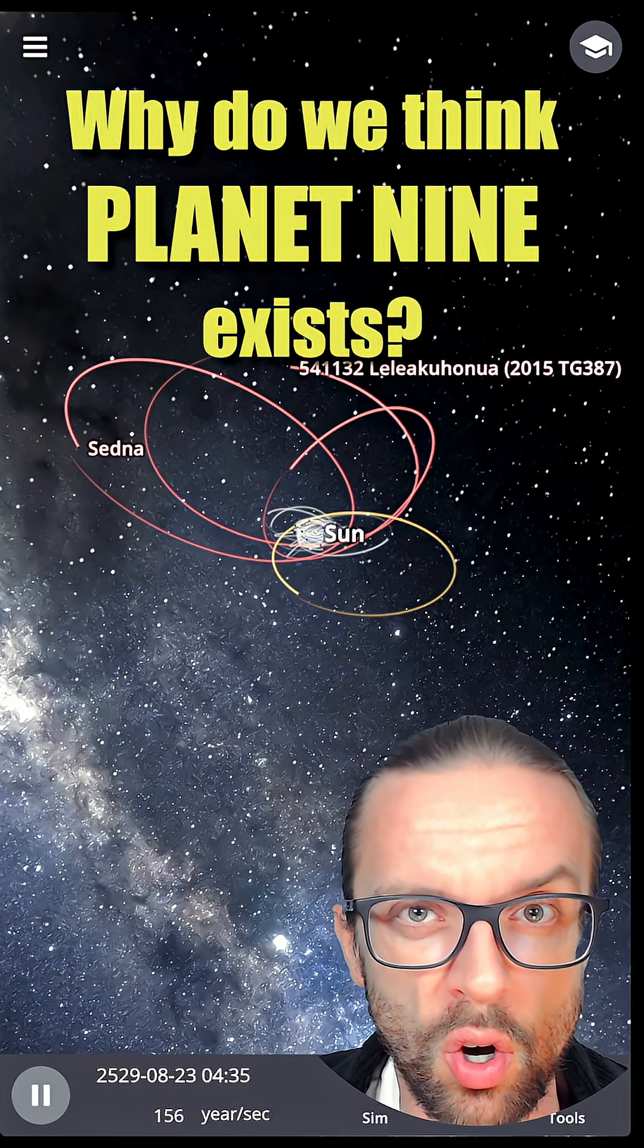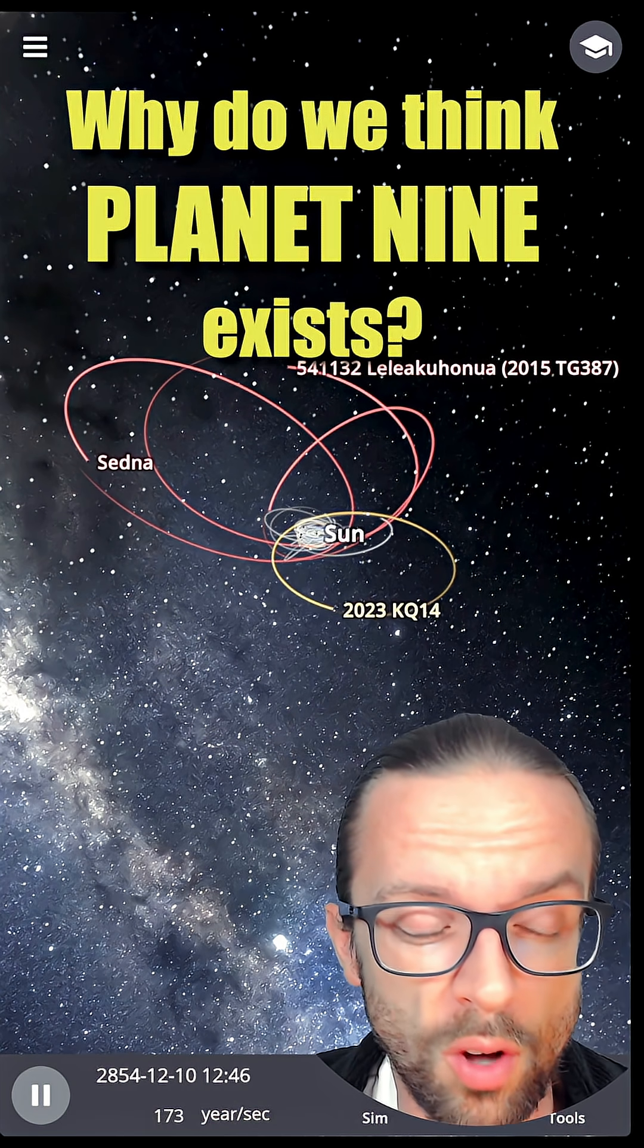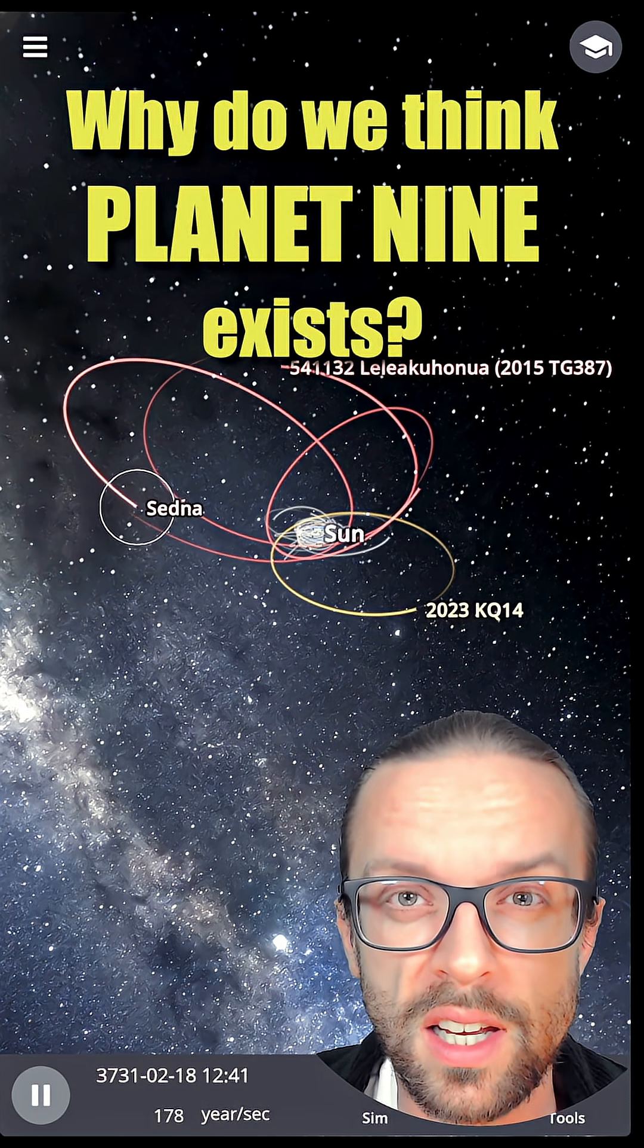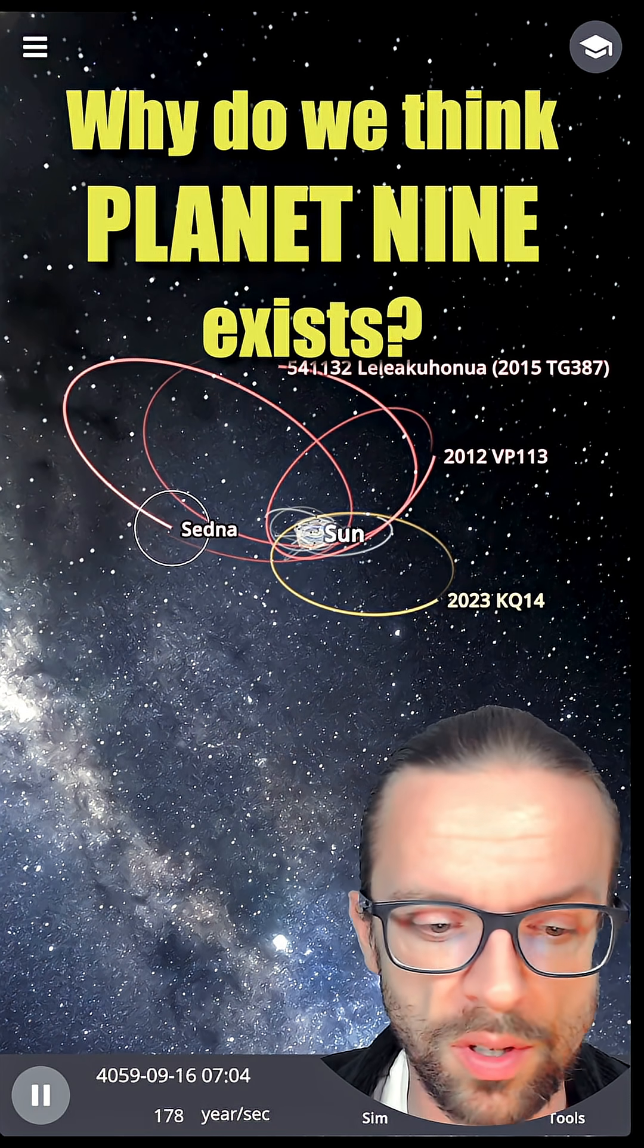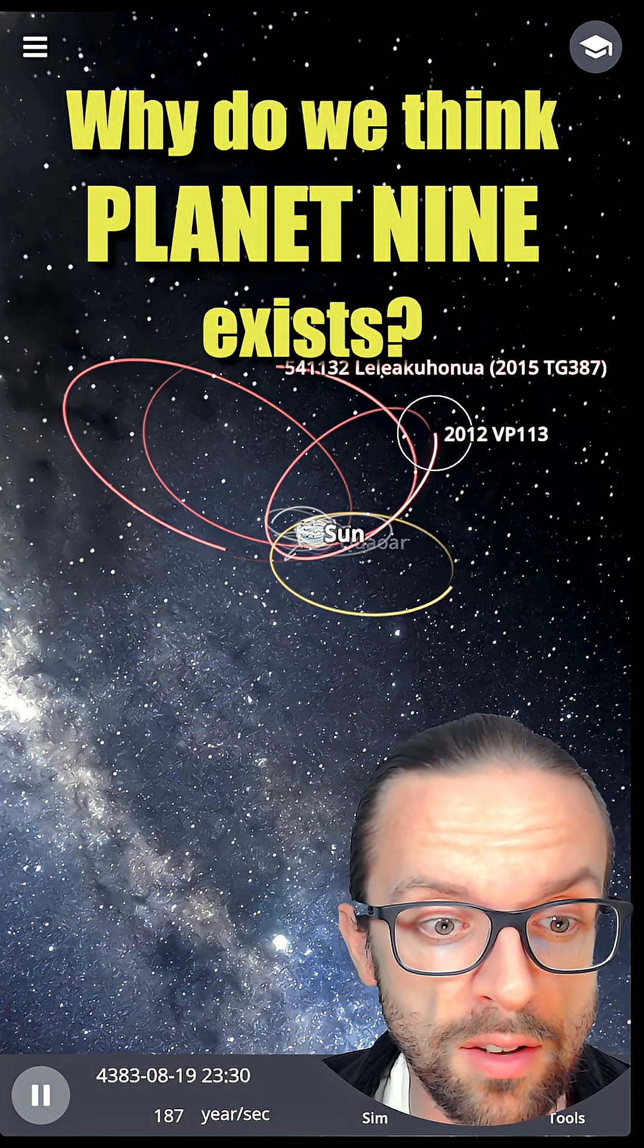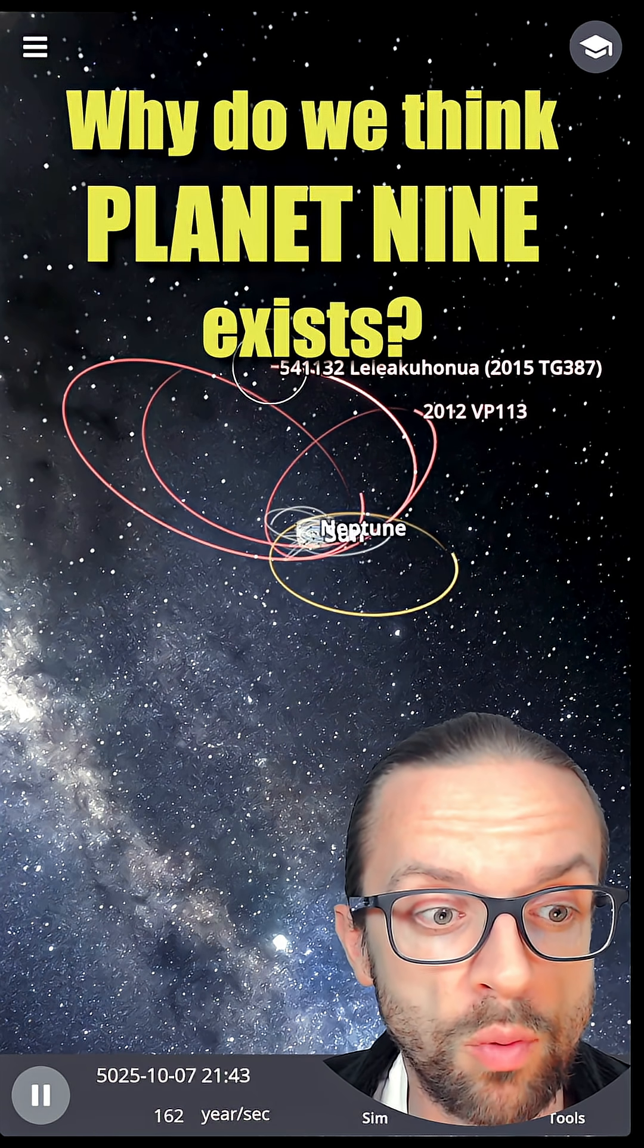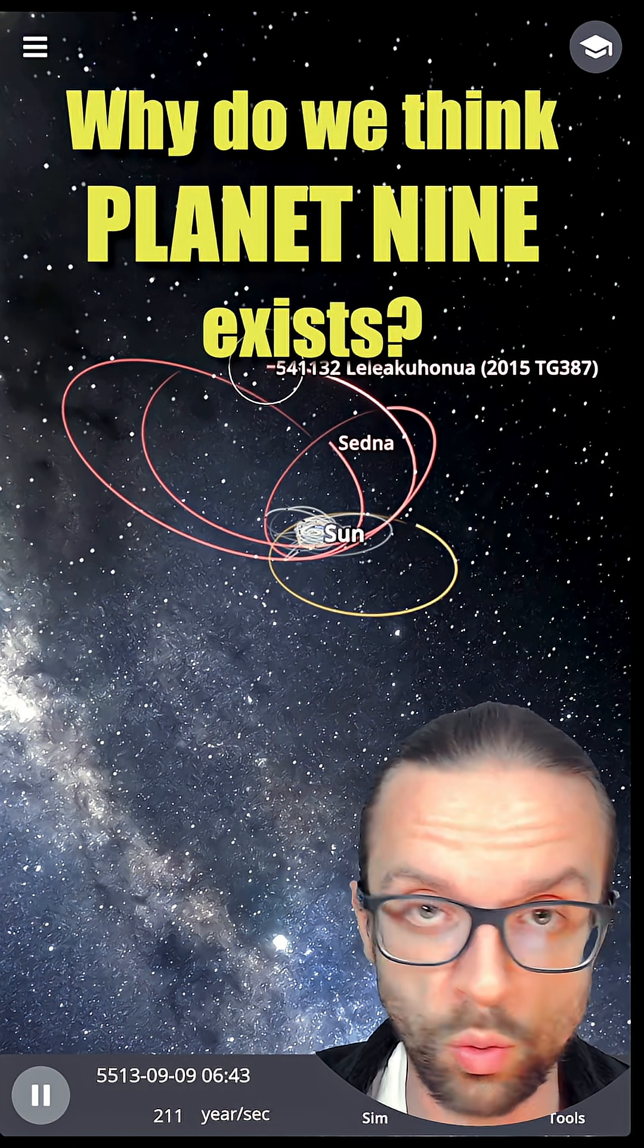Four objects are displayed here - three in the red color and one in the yellow one. The first one is Sedna, the name giver of the Sednoids. The second is 2012 VP113, and then we have 451132 Leleākūhonua.